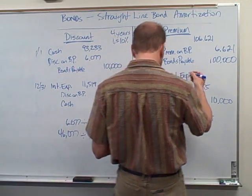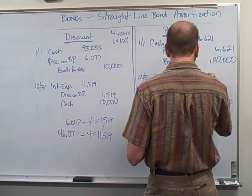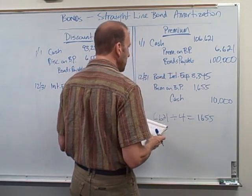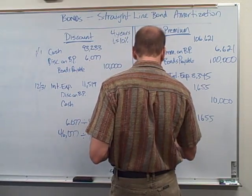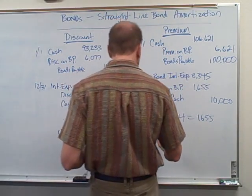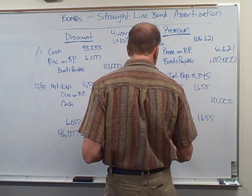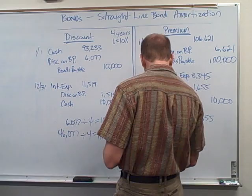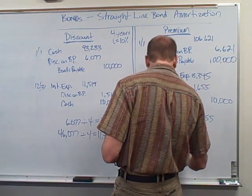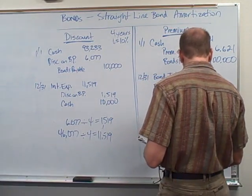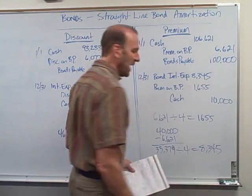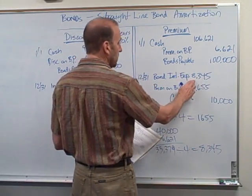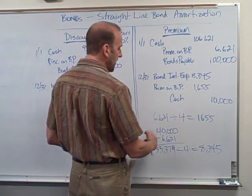So when you subtract these out, you'll get your interest expense at eight thousand three forty five. The textbook does it slightly different; other people do it different. They may take the forty thousand — that's the four interest payments times ten thousand — minus the six thousand six twenty one, that's the premium, which gets you thirty three thousand three seventy nine. Divided by four would get you your eight thousand three forty five. There may be slight rounding errors. But that's how you could get the bond interest expense, because you're just using the average over the four years.